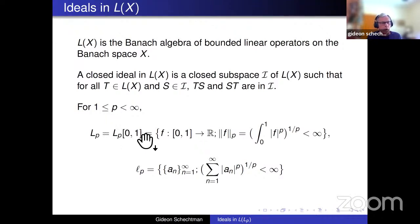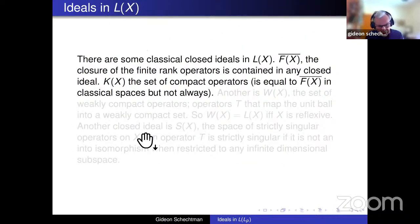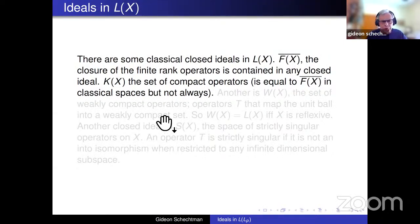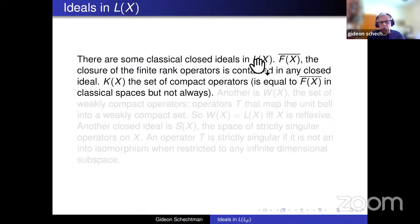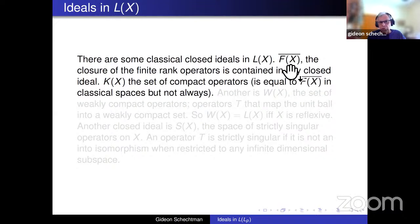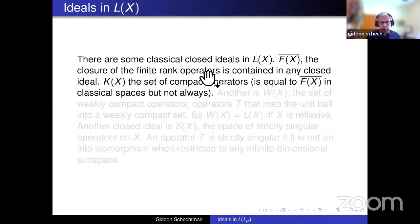Before going into Lp spaces, let me say something briefly about general Banach spaces X. Which closed ideals do we know in L(X)? The smallest one is the closure of the finite rank operators. It is easy to see that this is an ideal, and in fact any ideal — even if not closed — contains all the finite rank operators. So this is really the smallest one.